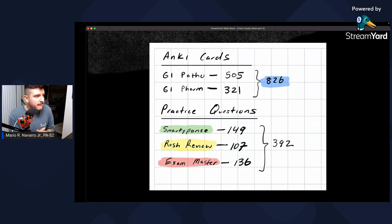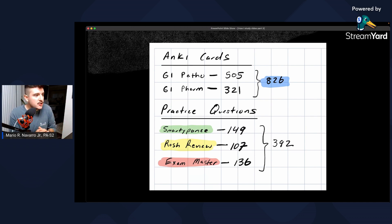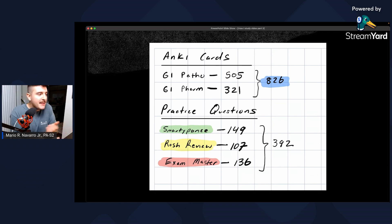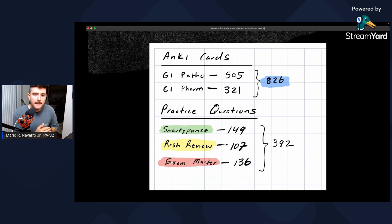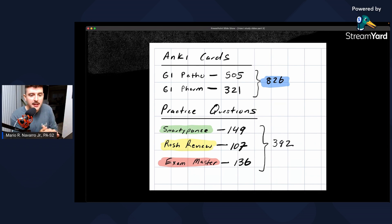You need to organize yourself to designate enough time to each class. Stepping back: I had 505 Anki cards for GI pathophysiology and 321 pharmacology cards — 826 total. I considered the 826 together because mentally I need all cards memorized by the exam. I also tracked practice questions for pathophysiology: 149 for Smarty Pance, 107 for Rosh Review, 136 for Exam Master — 392 total practice questions. Those practice questions prepare primarily for pathophysiology, not pharmacology. The Anki cards from lecture slides are the bulk of pharmacology studying.